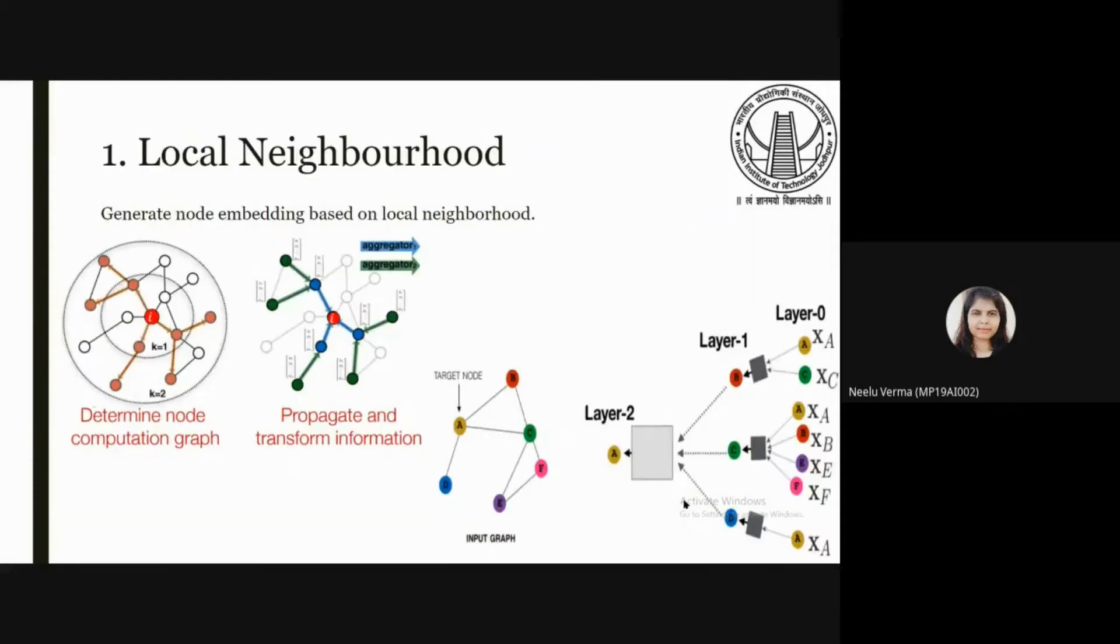Locality of information can be achieved by forming a computational graph. Let's say this is a node we are focusing on. We will see how this red node i is connected to its neighbors and neighbor of neighbors.